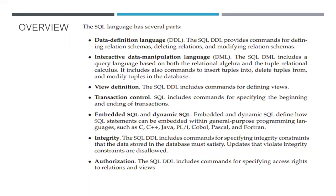Authorization — the SQL DDL includes commands for specifying access rights to relations and views. In a banking example, a manager can view everything because he has rights to access everything. A cashier only sees the account number and account balance, not the customer's mobile number or address. Likewise, a person updating customer information can see those details but will not be able to see the account balance. In this way, the SQL language has different parts with different access levels.